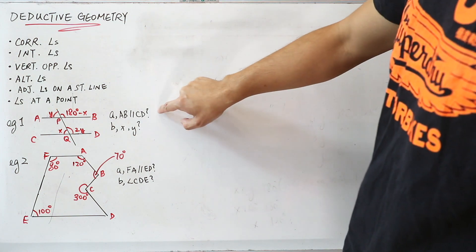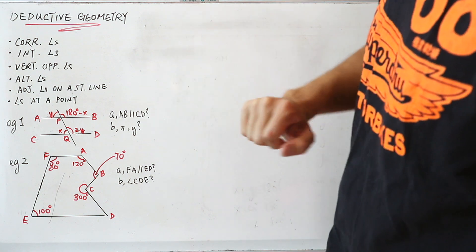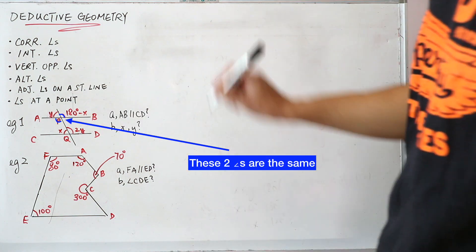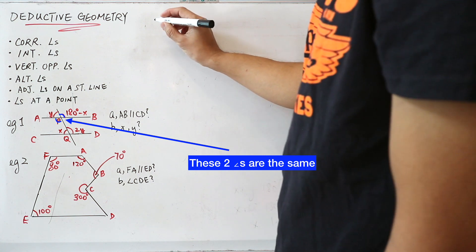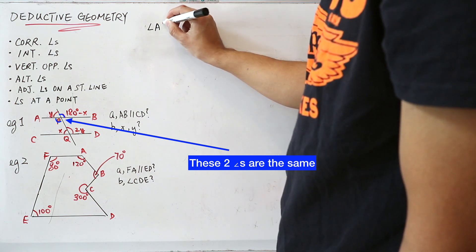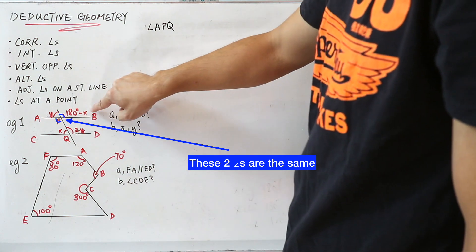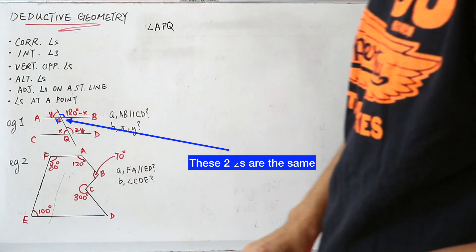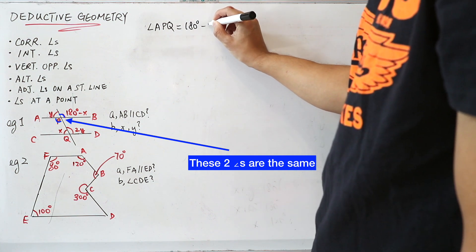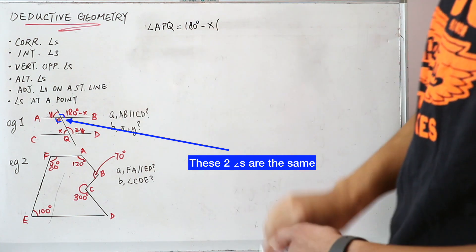So for part A, you're asked whether AB and CD are parallel. First, you need to know that angle APQ, which is this angle here, is equal to 180 degrees minus X. The reason is vertically opposite angles.